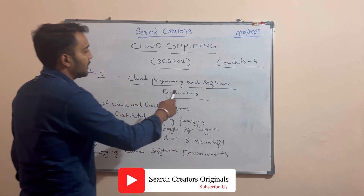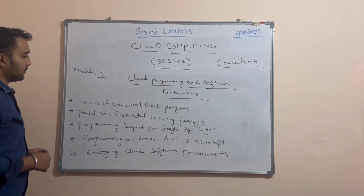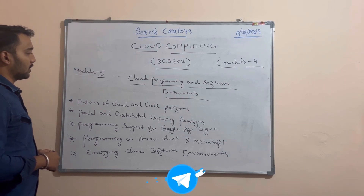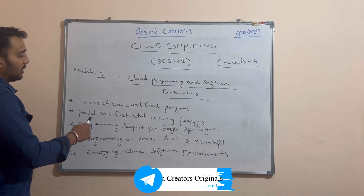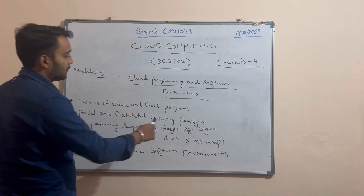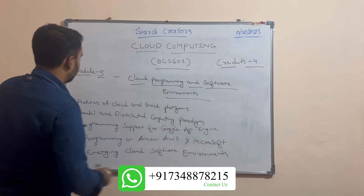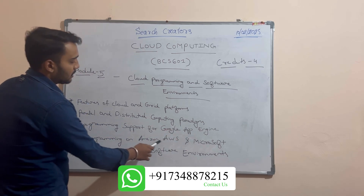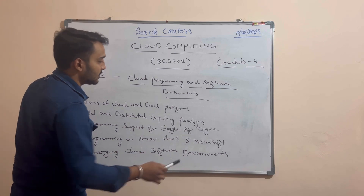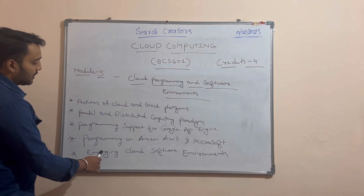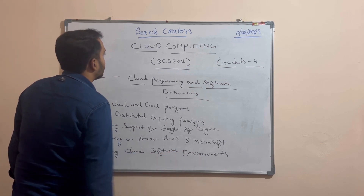Module 5 is Cloud Programming and Software Environments. In Module 5 we are going to see different concepts like features of cloud and grid platforms, parallel and distributed computing paradigms, programming support for Google App Engine, programming on Amazon AWS like creating an account, Microsoft, and we are also going to look at emerging cloud software environments.